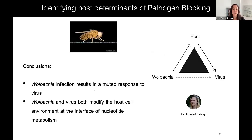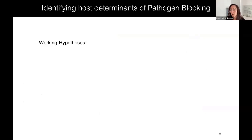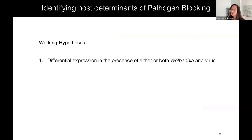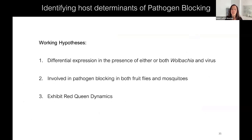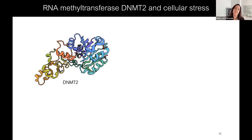In conclusion for this part of the talk: Wolbachia infection results in a muted response to virus, and Wolbachia and virus both modify the host cell environment at the interface of nucleotide metabolism. We've been mining this dataset to identify other host determinants involved in pathogen blocking. The working hypothesis is that these genes must be differentially expressed in the presence of Wolbachia or virus or both, can be involved in pathogen blocking in both fruit flies and mosquitoes, and could exhibit red queen dynamics — where virus, Wolbachia, and host have been on an evolutionary arms race to circumvent the host immune response.